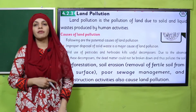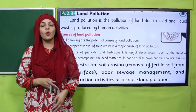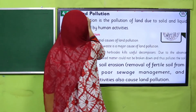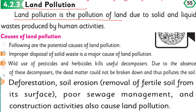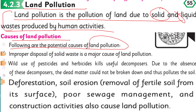Now is the time for reading. Quickly open page number 55 in your Science 5 books. Put your fingers where I read. Land pollution is the pollution of land due to solid and liquid waste produced by human activities. Land pollution jo hai wo aisi pollution hai jo ke solid ya liquid waste ko dump kar diye jane ki wajah se zameen ke upar hoti hai.